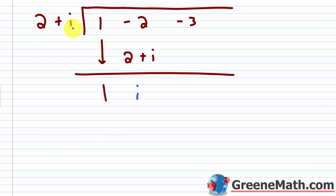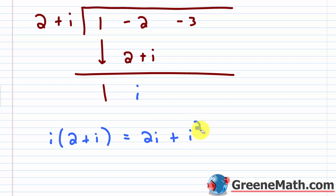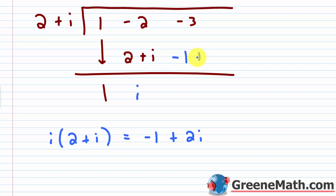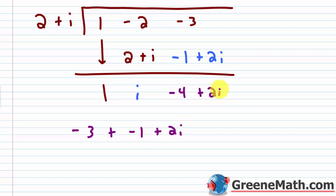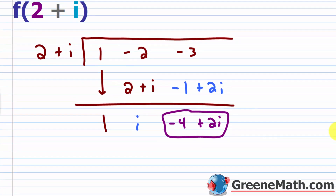Now we multiply: 2 plus i times i. That's i times 2 plus i: i times 2 is 2i, and i times i is i squared, which by definition equals negative 1. So we get negative 1 plus 2i. Adding negative 3 plus (negative 1 plus 2i): the real parts give negative 3 plus negative 1 equals negative 4, and plus 2i comes along. So the remainder is negative 4 plus 2i, meaning f of 2 plus i equals negative 4 plus 2i.